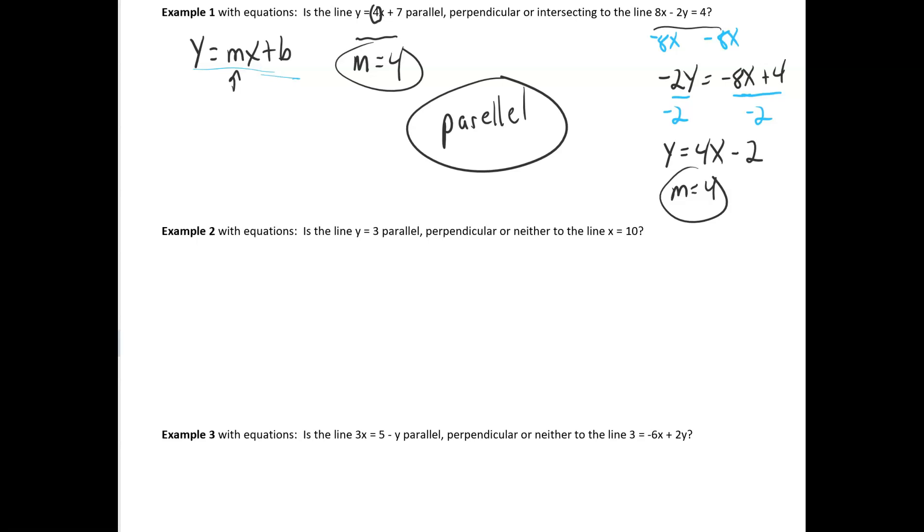Let's look at the next example. We have the equation y equals 3. We want to know if it's parallel, perpendicular, or neither to x equals 10. Whenever you have y equals any number, that is a horizontal line. And whenever you have x equals any number, that is a vertical line. Horizontal lines and vertical lines are perpendicular, so this is perpendicular. Just in case this is a little bit confusing, I can just draw a quick graph to show you. y equals 3 would be a line up here at 3. x equals 10 would be a line way over here at 10. And you can see that those lines are going to meet at a right angle.